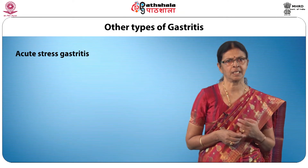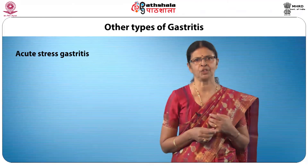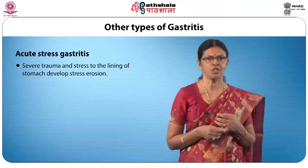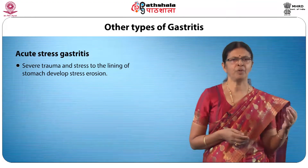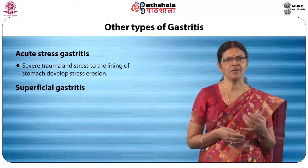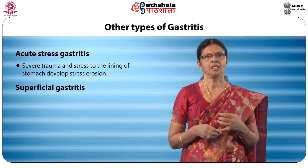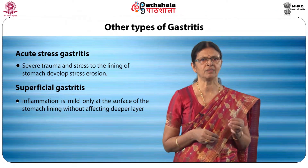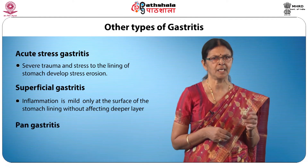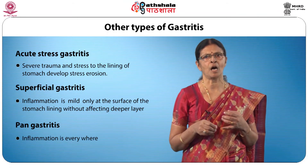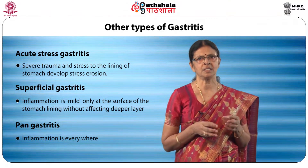The first one is acute stress gastritis, which occurs after surgery in critically ill patients. Severe trauma and stress to the lining of the stomach may develop stress erosion. Next is superficial gastritis or surface gastritis — it is the initial stage of chronic gastritis. Inflammation is mild only at the surface of the stomach lining without affecting the deeper layer. Pan gastritis refers to inflammation observed in the entire part of the stomach lining, indicating that gastritis is everywhere.